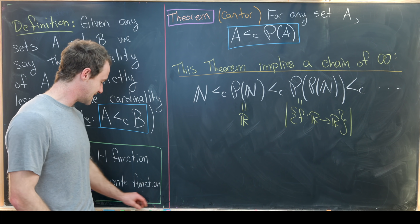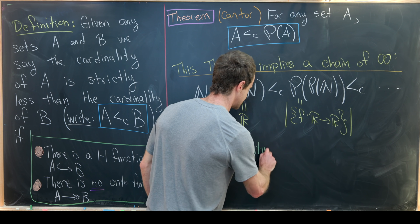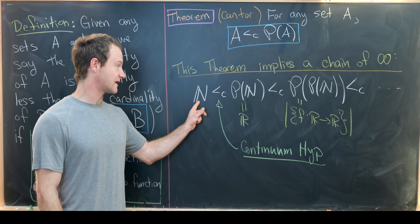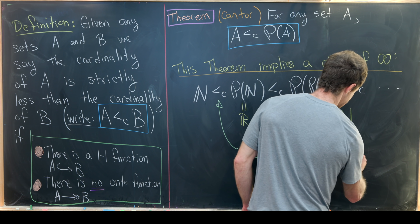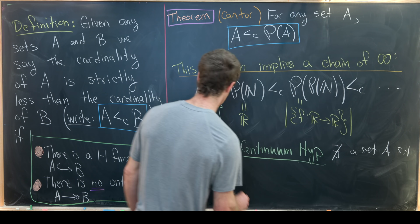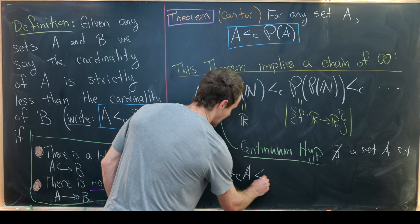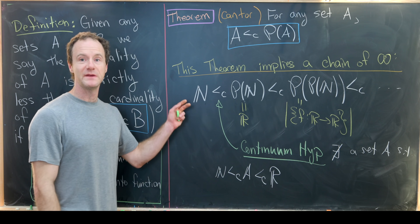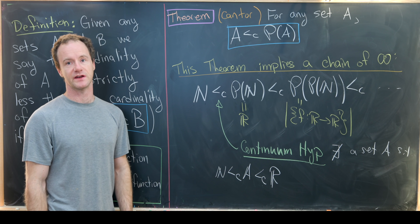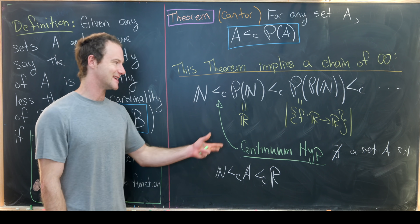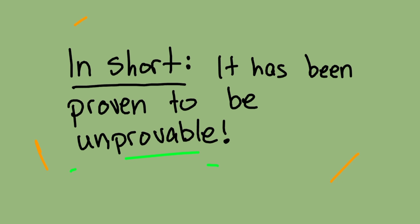Another thing to point out before the proof is a famous hypothesis known as the continuum hypothesis, which says no sets have cardinality strictly bigger than N and strictly less than R. In other words, there does not exist a set A such that |N| < |A| < |R|. That means not only do we have an infinite chain of infinities, but a discrete one — if the continuum hypothesis is true.